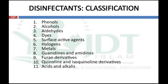Chemically, disinfectants are classified into phenols, alcohols, aldehydes, dyes, surface active agents, halogens, metals, guanidines or amidines, furan derivatives, quinoline and isoquinoline derivatives, and acids. In each class we need to cover the mechanism of action of killing of bacteria, different examples, and different pharmaceutical and microbiological applications of that class.